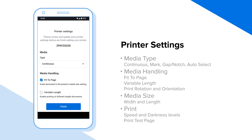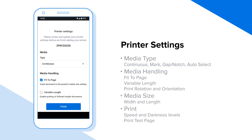Scroll to review and update all printer settings. Media type: choose continuous, mark, gap notch, or auto-select.